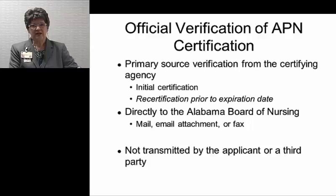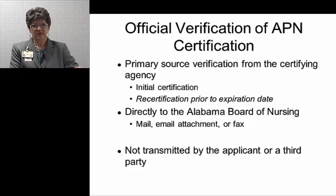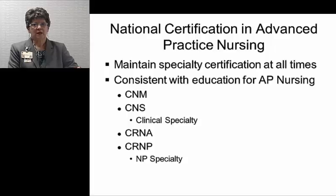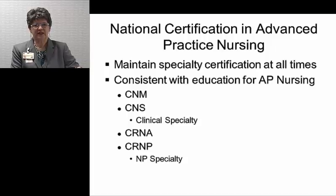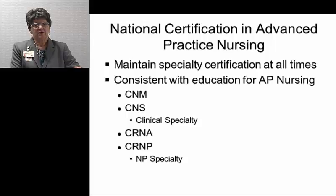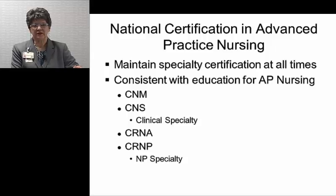All items received by mail are date stamped with the day we receive them, and that is noted in your application history on our data system. Official verification and primary source verification means that the certificate is not transmitted to the Board of Nursing by the applicant or a third party — it comes directly from the agency to the Alabama Board of Nursing. National certification must be on record at all times. If your national certification lapses in our records, then your approval to practice will also lapse. That means you cannot practice as a nurse practitioner, nurse midwife, nurse anesthetist, or clinical nurse specialist if we do not have your current specialty certification on file.